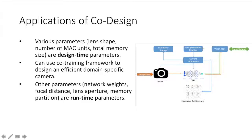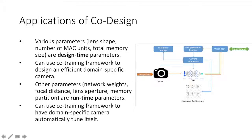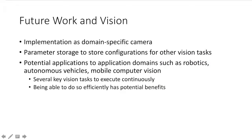However, in a lot of cases, there's another set of parameters such as network weights, focal distance, lens aperture, memory partition, and other things that we refer to as runtime parameters. These parameters can be incorporated into the co-training framework to have such a domain-specific camera automatically tune itself. As future work, we're trying to implement this idea as a domain-specific camera with parameter storage to store configurations for other vision tasks. By doing so, we'll design cameras that have potential applications to robotics, autonomous vehicles, and mobile computer vision, where we have several key vision tasks to execute continuously, and being able to do so efficiently has enormous potential benefits.